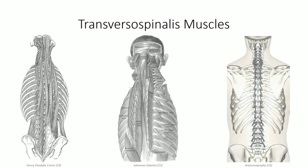Deep to the erector spinae group are the transversospinalis muscles. The name comes from the fact that these muscles originate off the transverse processes and project superiorly and medially to attach to the spinous processes. Three separate bellies can be identified lying superficial to deep. Semi-spinalis is the most superficial of this group; its fibers typically span five or six segments before inserting, with the prominent capitis portion attaching between the superior and inferior nuchal lines at the base of the skull. The semi-spinalis does not extend the entire length of the vertebral column, reaching only as far as the lower thoracic and upper lumbar region.